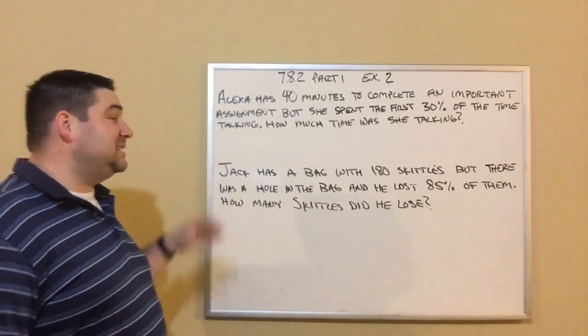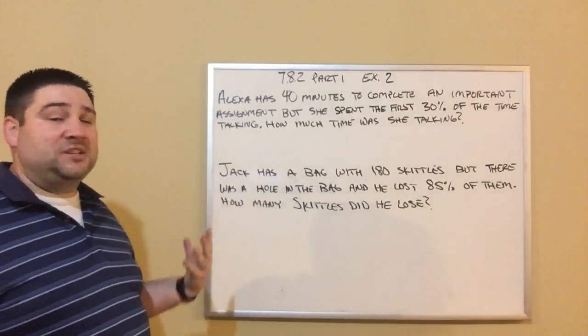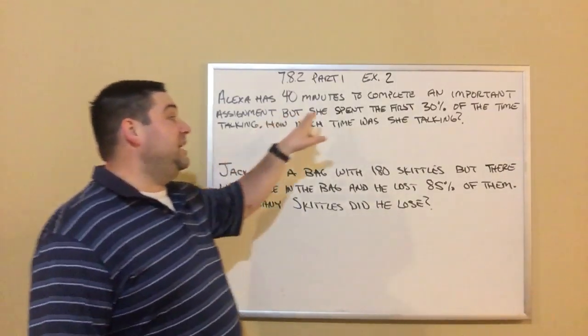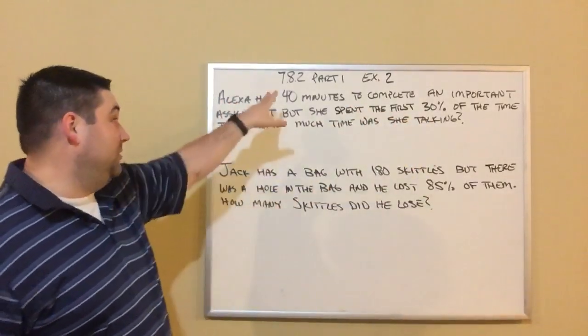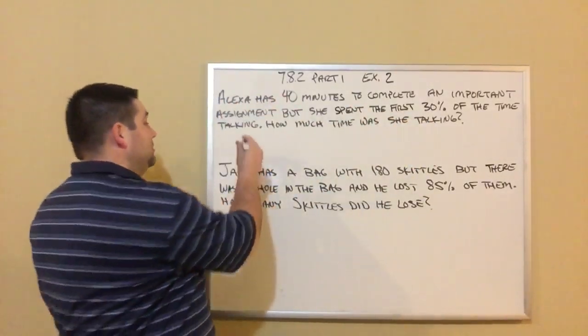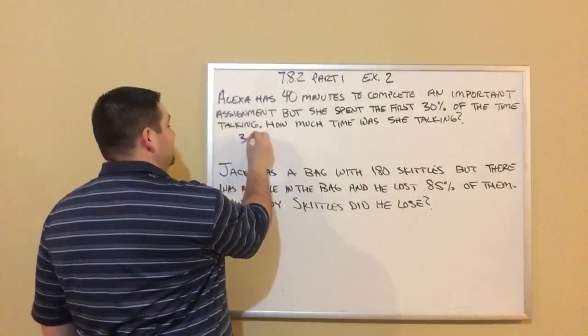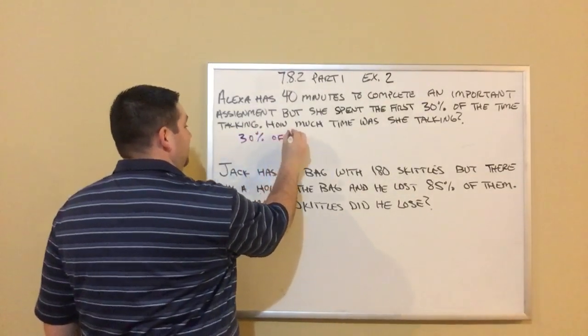So basically, if you think back to the problems from example one, we need to find 30% of the total time. We know the total time is 40 minutes. So we're just doing 30% of 40.